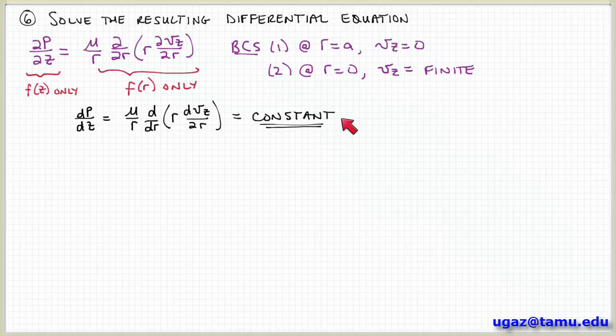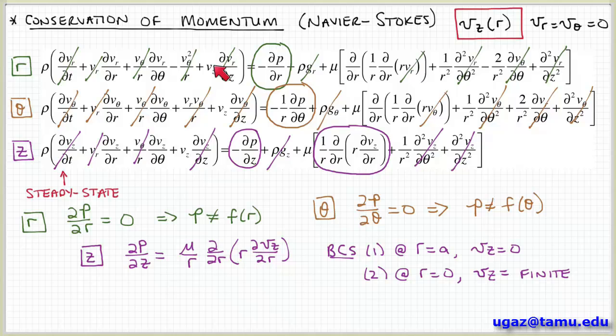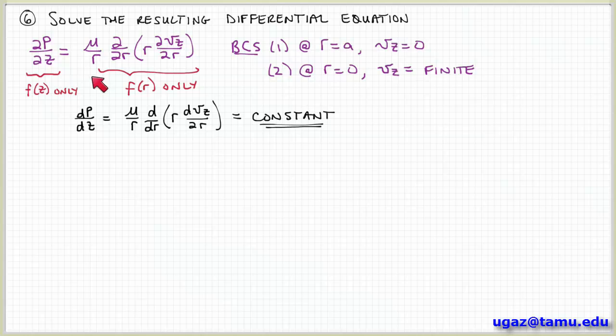So this insight allows me to decouple these two parts of the differential equation. I think this is probably called separation of variables approach. How do I know this left-hand side is a function of z only? Well, remember, when we went through the conservation of momentum for the r and theta components, I preserved these pressure gradient terms. And those told me that I don't have a pressure gradient in the r or theta direction, so therefore the pressure is not a function of r and the pressure is not a function of theta.